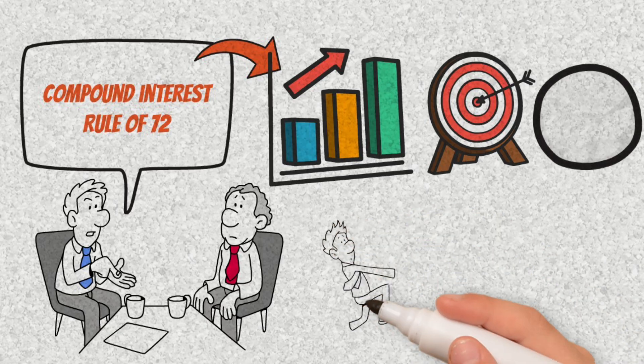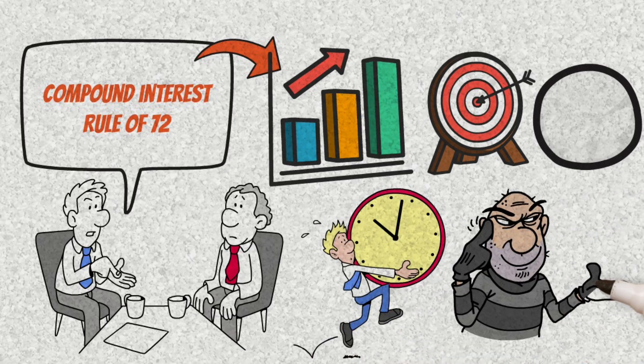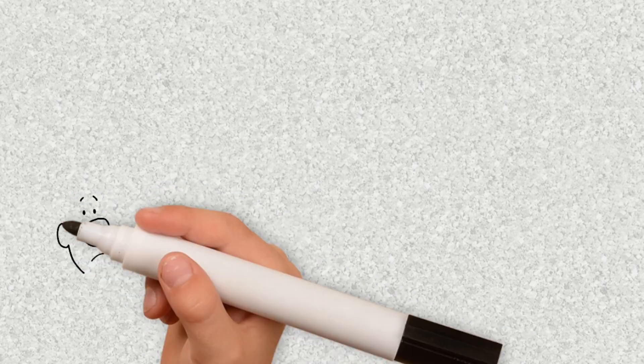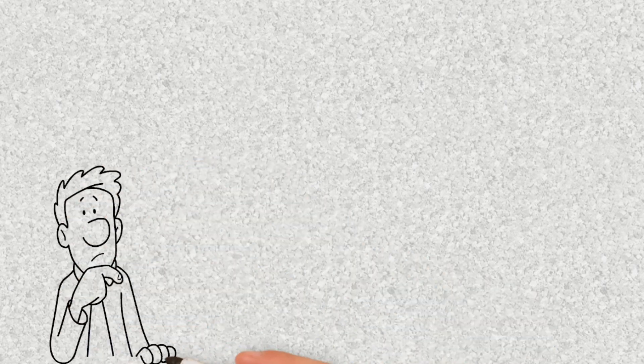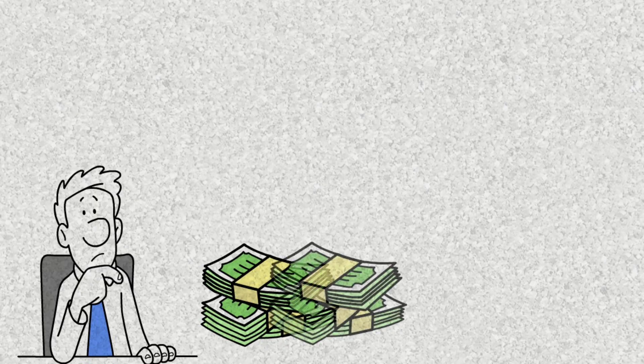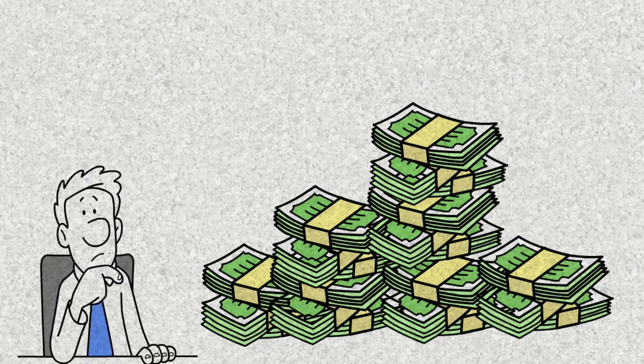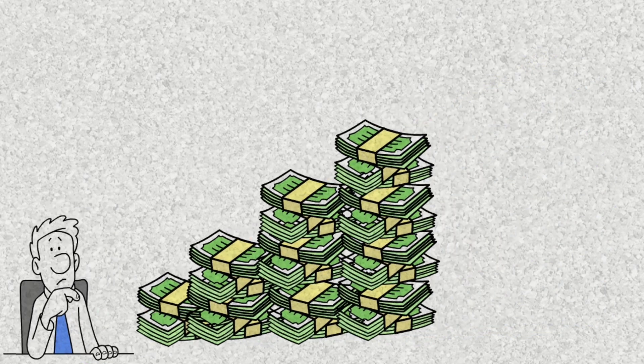The problem is that most people underestimate time. They want immediate results, ignore patience, and end up sabotaging their own future. When you understand how compounding works and apply the 8-4-3 rule, every dollar invested becomes a small worker that generates more dollars, which in turn generate even more. And this happens faster and faster.